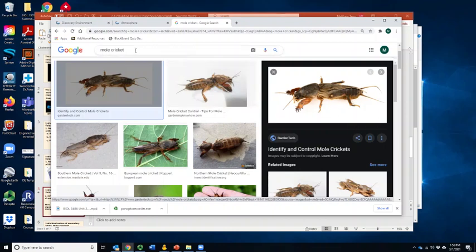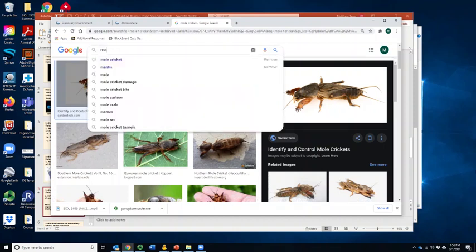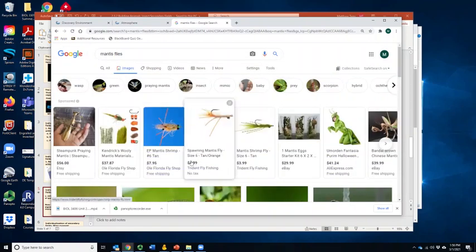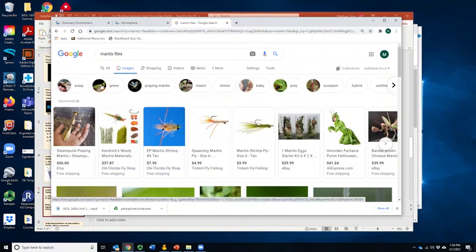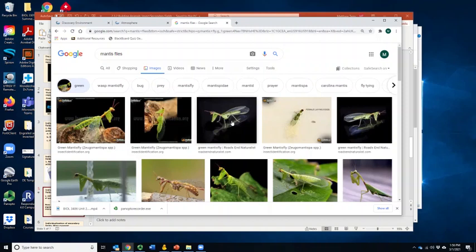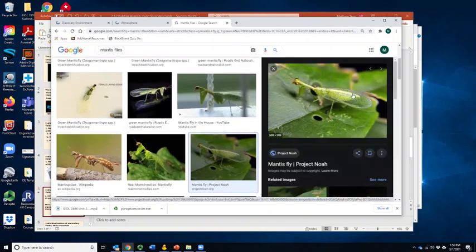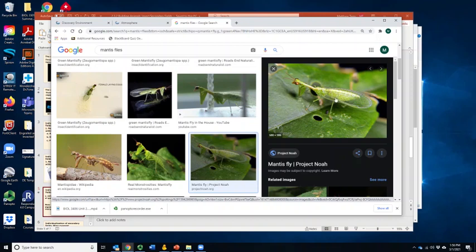And in fact, there are even some really cool convergent examples. So there is a group of organisms called mantis flies. This is a mantis fly. And mantis flies are closely related to lacewings, which you might expect based on the image. It kind of looks like a green lacewing, if you're familiar with those. But they are, in some ways, morphologically similar to praying mantises. And that's the name. But they're only very, very distantly related to praying mantises.